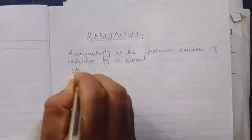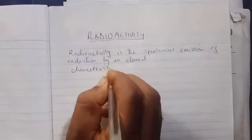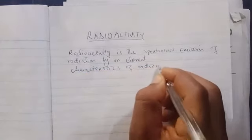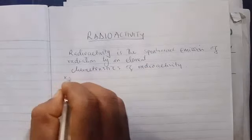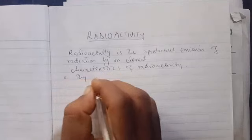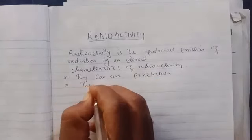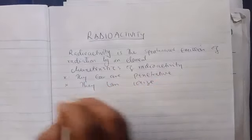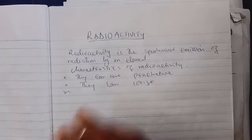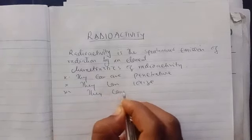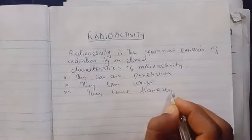Now, characteristics of radioactivity. One: they are penetrative — they can penetrate materials. Two: they can ionize. Three: they can cause fluorescence in certain compounds.